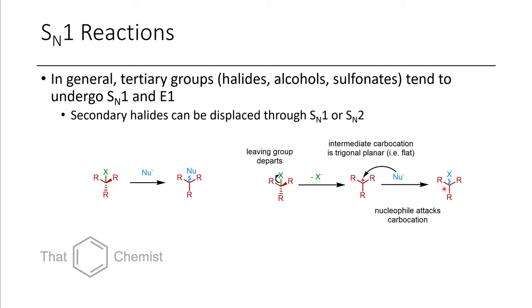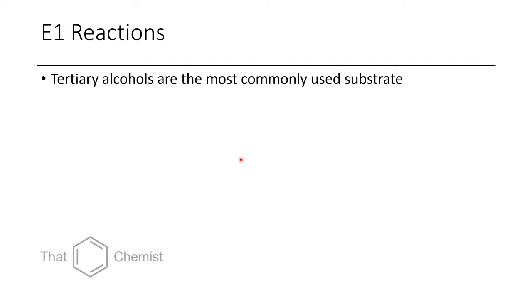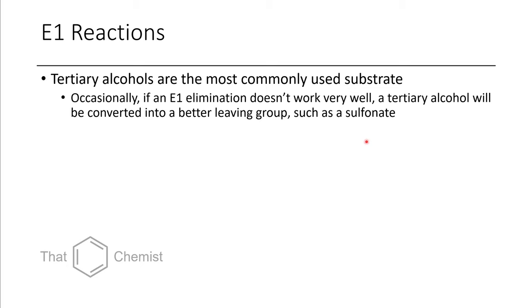So similarly, for E1 reactions, tertiary alcohols are the most commonly used substrate. So normally you can just treat them with a strong acid and they will eliminate.